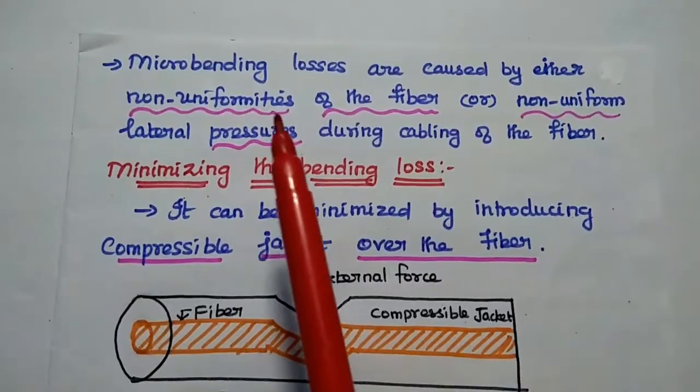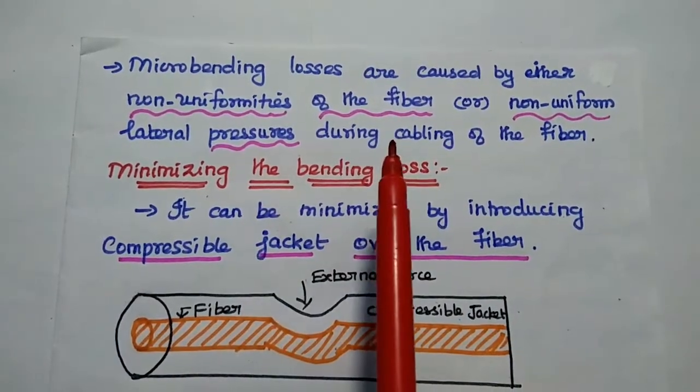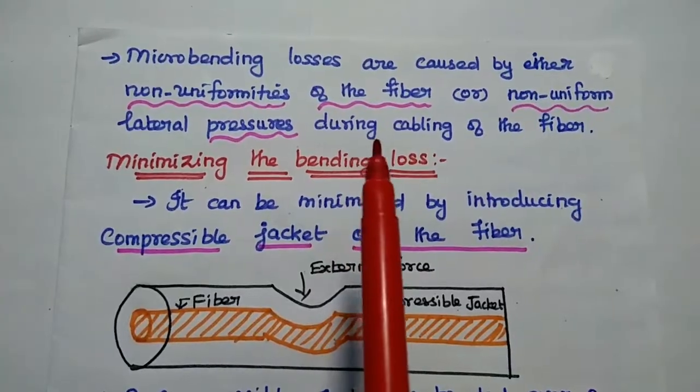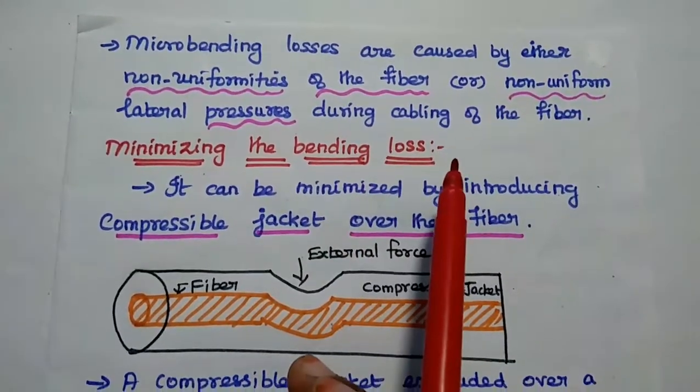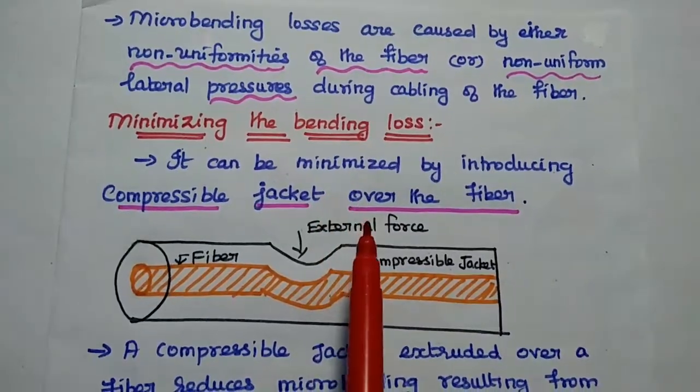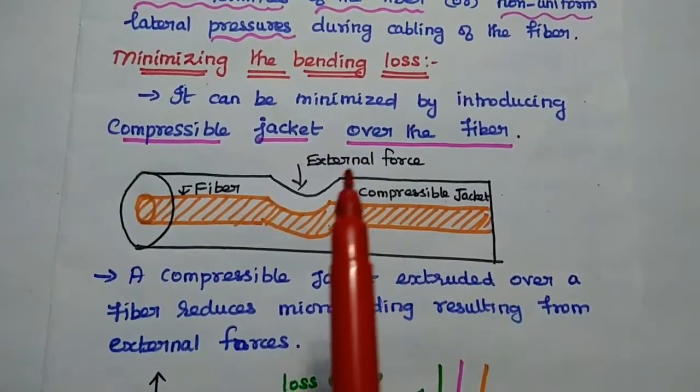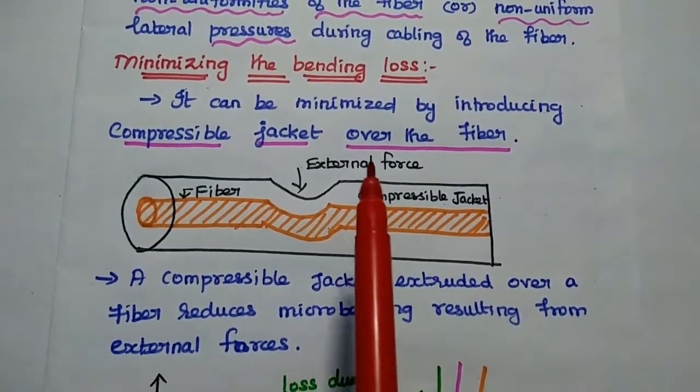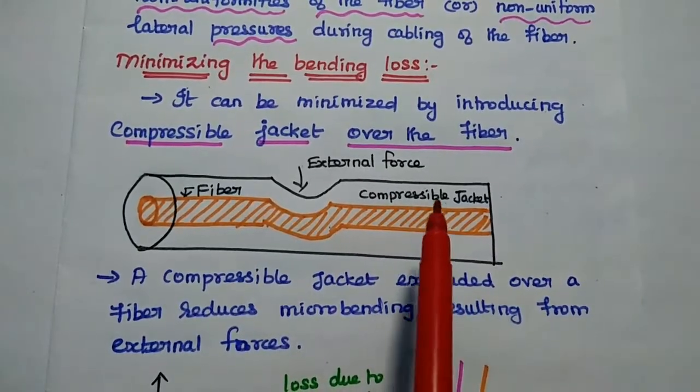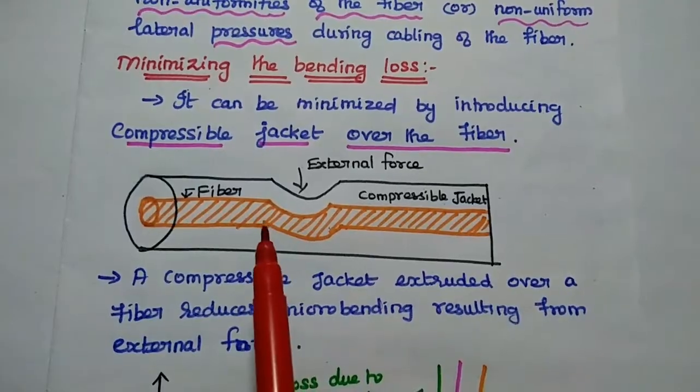This micro bending losses are caused by either non-uniformities of the fiber or non-uniform lateral pressures given during the cabling of the fiber. This micro bending losses can be minimized by introducing compressible jacket over the fiber. When external forces are applied to this fiber, this compressible jacket will be deformed and to protect the fiber inside it.